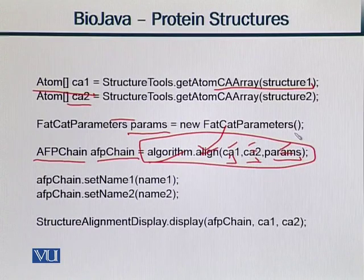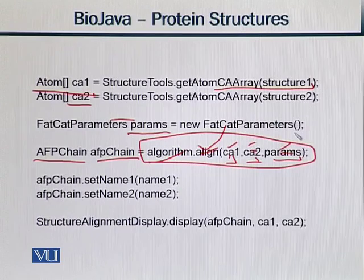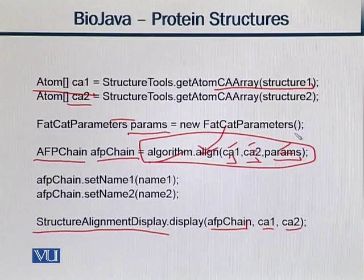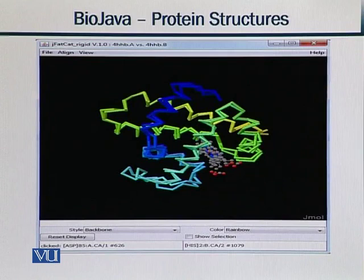Finally, we have AFP chain dot setName1 with name1, and AFP chain dot setName2. We have two structures, and we show that we have aligned them to produce a final output in the correct format.